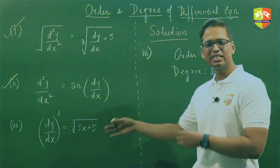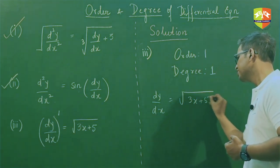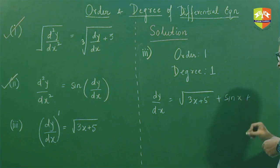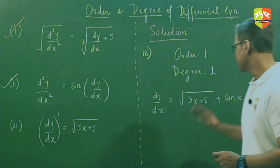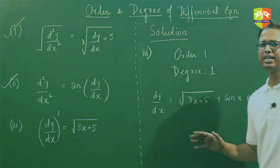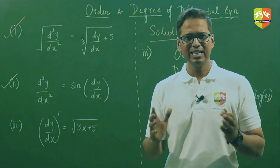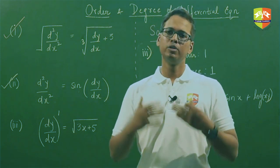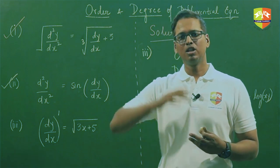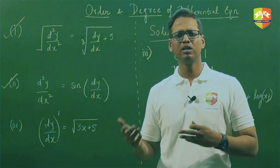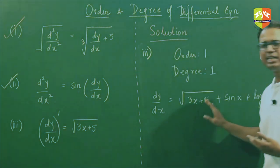As an extension: if the equation were dy/dx = √(3x+5) + sin(x) + log(xy), the degree would still be 1. The sine, root, and log terms on the independent and dependent variables have no bearing on deciding the degree. The key idea is that only the differential coefficients must be in polynomial form — none of their powers should be negative or fractional. On the dependent and independent variables, we can have sine, log, negative powers — anything is allowed.